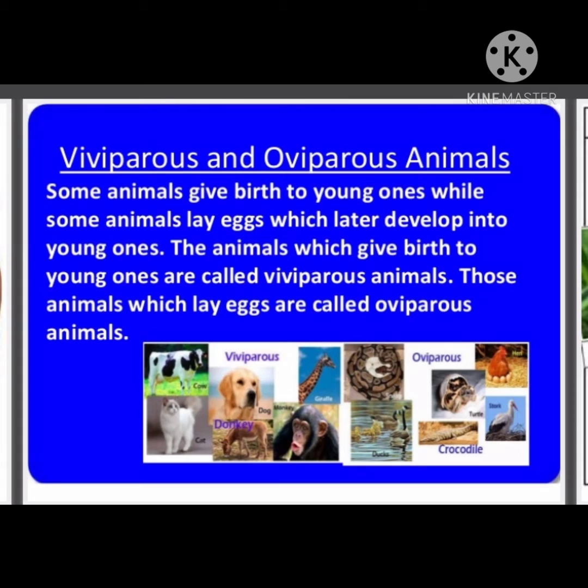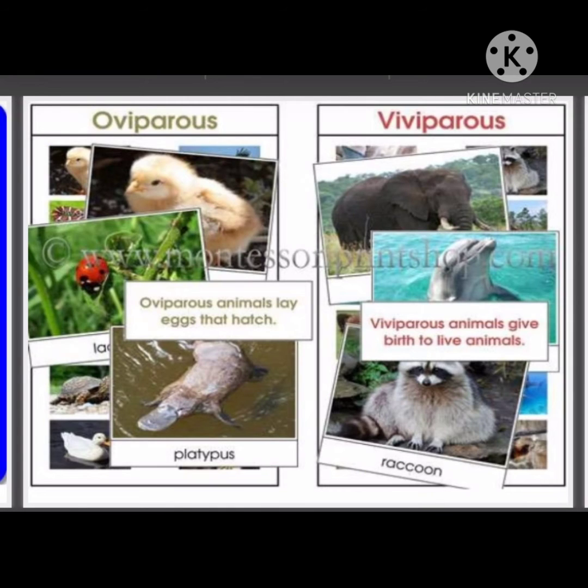Human beings, cats, goats, dogs, etc. — all these are examples of viviparous animals.